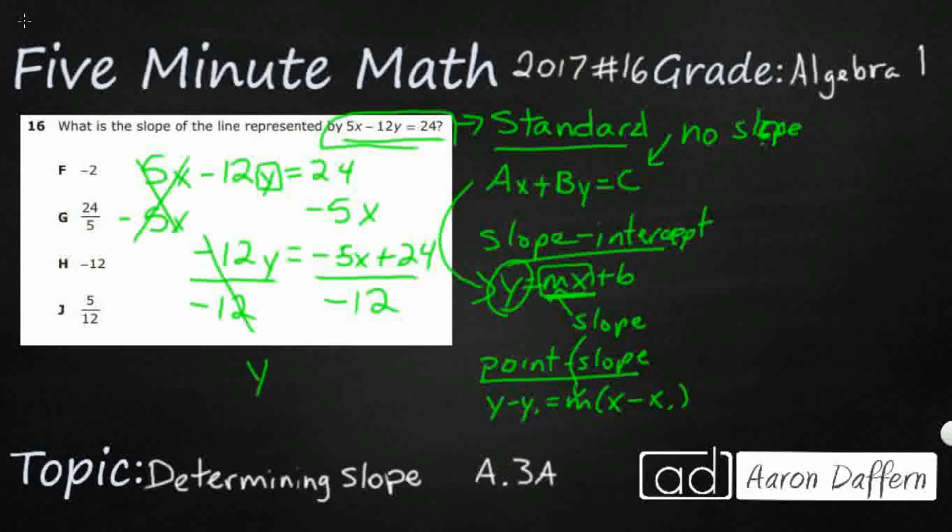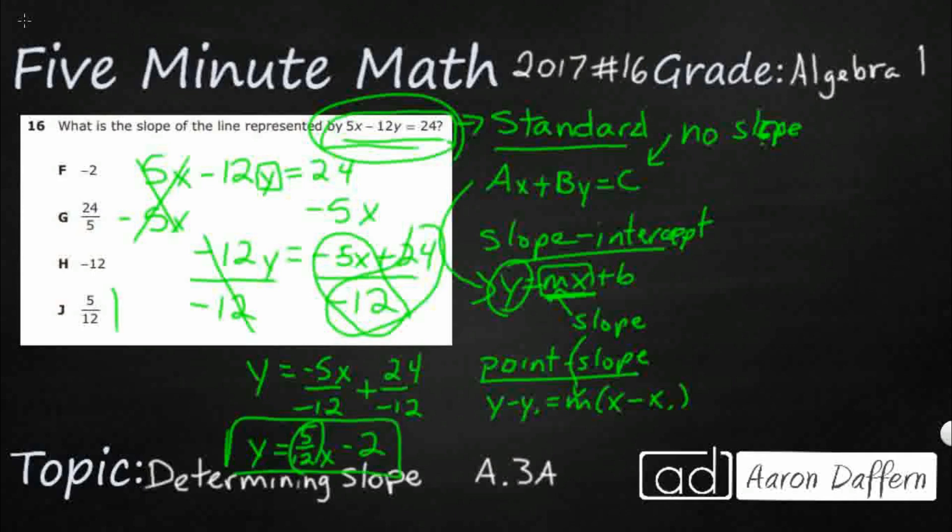And then we can actually distribute this out. So we can actually distribute out towards this and this separately. So negative 5X over negative 12 plus 24 over negative 12. And then if we wanted to simplify that, if we wanted to get straight into our slope intercept form, the two negatives are going to cancel out. But 5 twelfths cannot be reduced. So it's just 5 twelfths X. And I got 24 divided by 12 is 2, and it's going to end up being negative. So this equation is this in slope intercept form. And there's my slope 5 twelfths J.